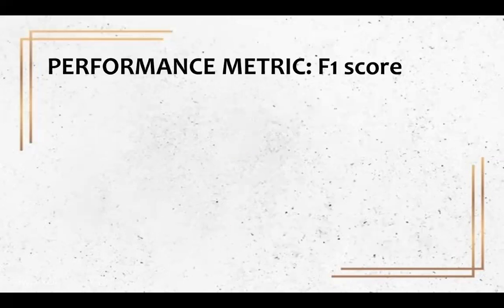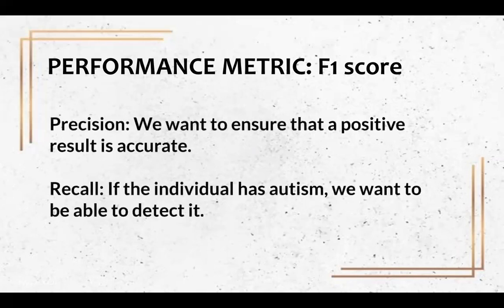Instead of focusing on the accuracy of our machine learning model, we decided to use the F1 score metric, which is a combined measure of precision and recall. Precision is important as we want to ensure a positive result is accurate, and recall is important as we want to be able to detect all individuals who have autism.